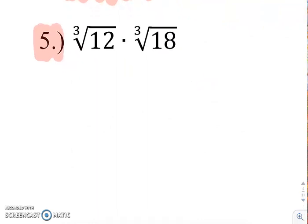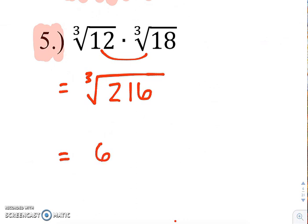So why don't you guys try number 4 and I'm going to go over here and do number 5. So this is the one where I'm going to put them together underneath the same radical since they have the same index. So we need to figure out what 12 times 18 is and it's 216. Now in this case, the cubed root of 216 is actually a perfect cube and if you look on your power sheet, you guys should be able to see that the cubed root of 216 is just equal to 6. 6 times 6 times 6 is 216.